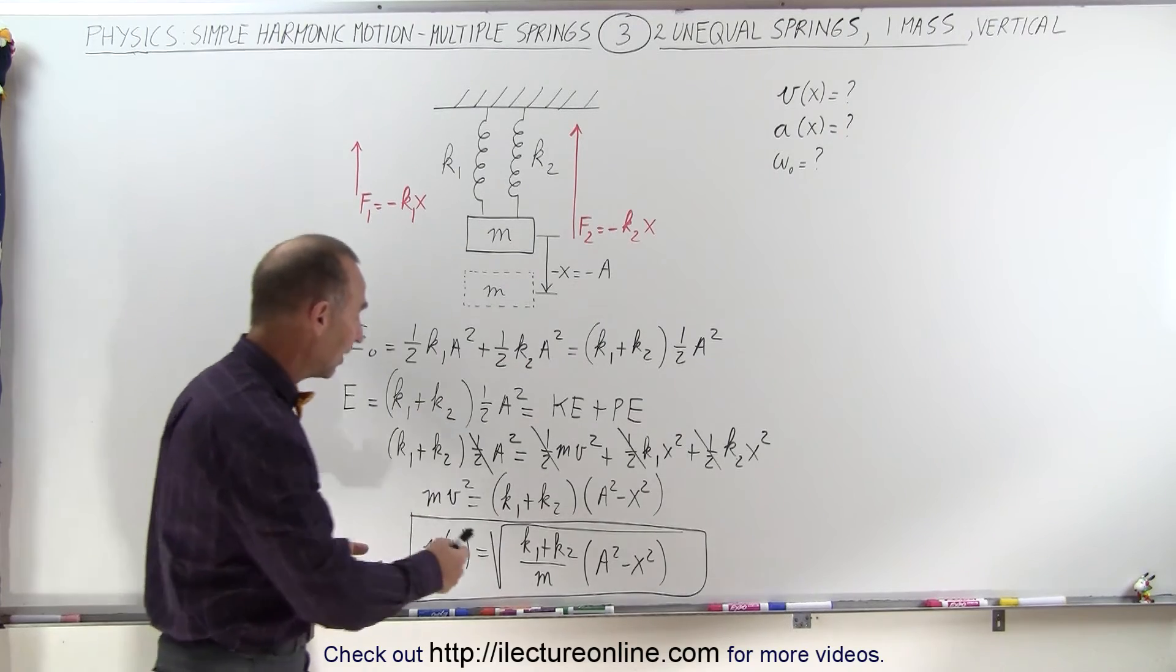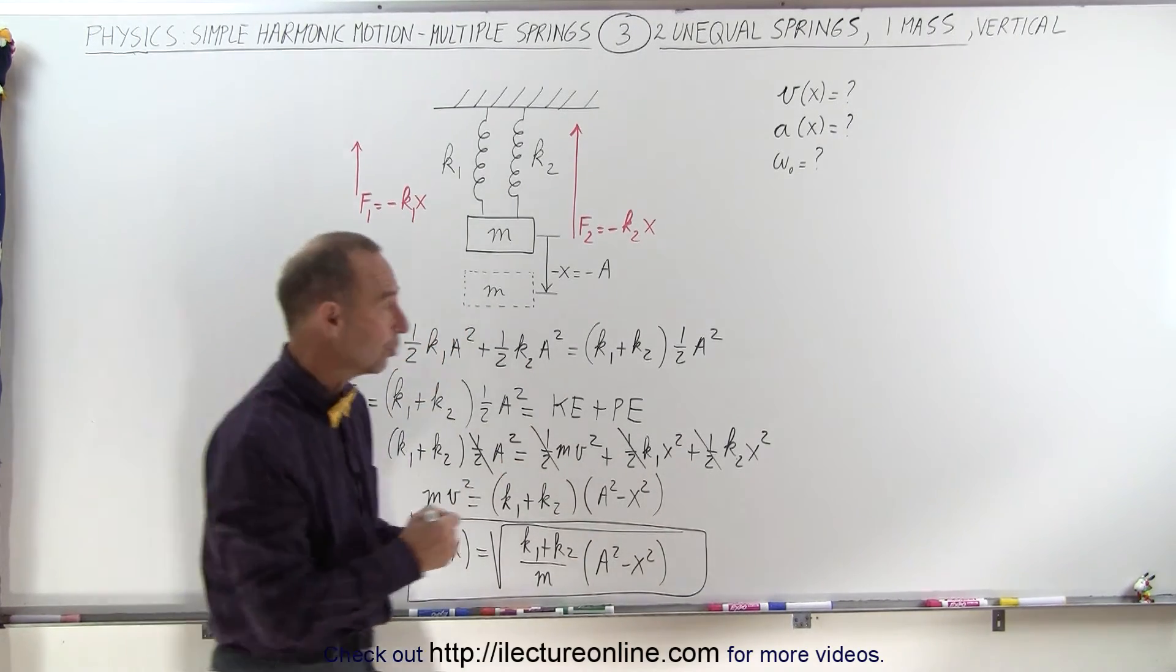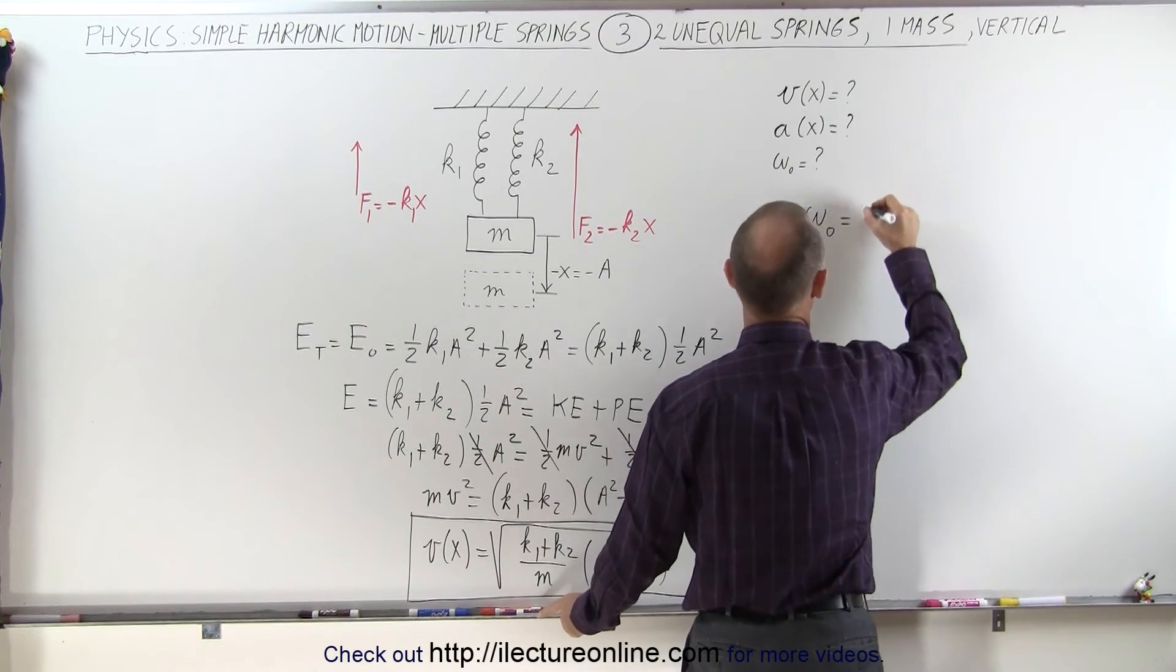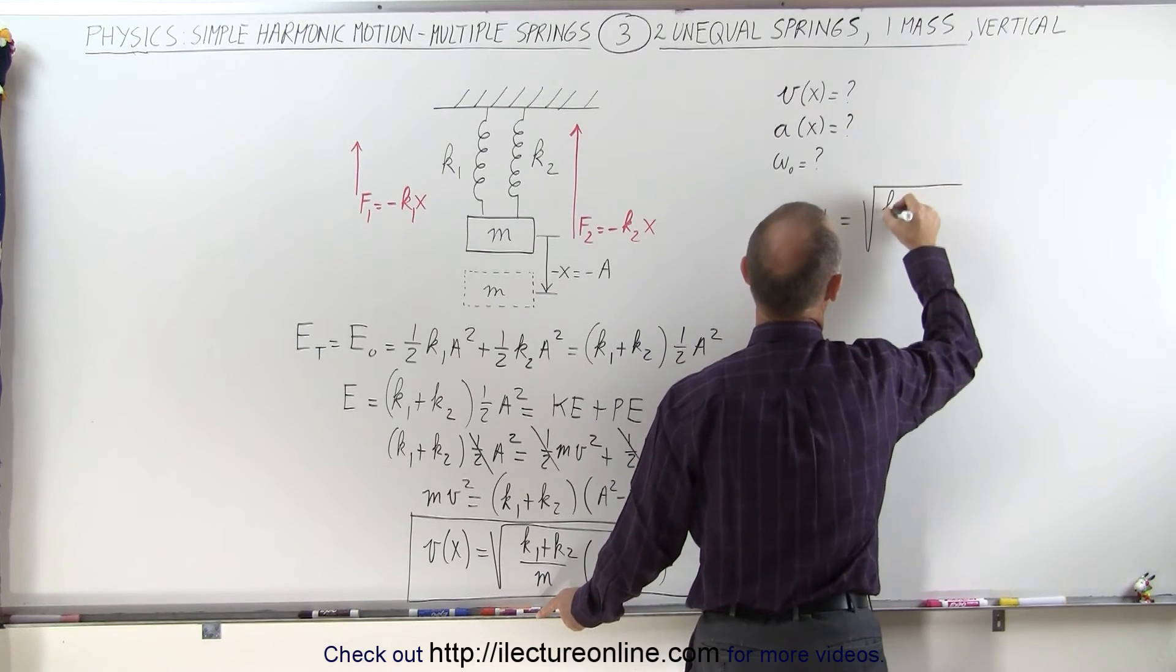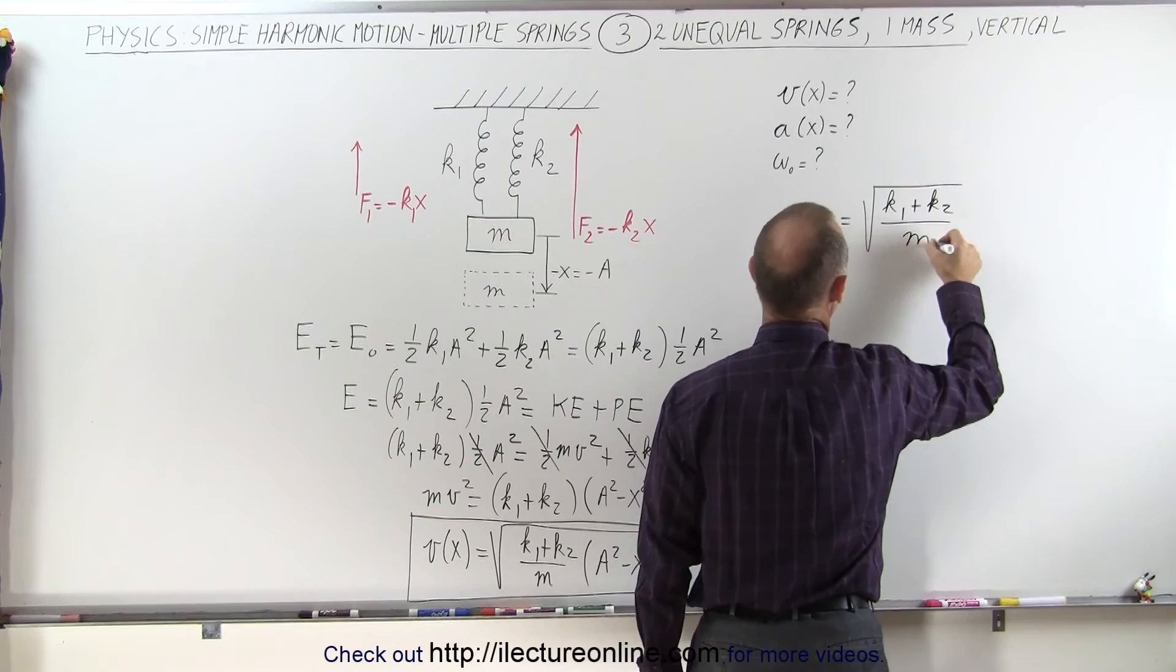Next, we realize that this here, again, represents the natural frequency of oscillation, which means that in this example, omega sub-naught, the natural angular frequency is going to be equal to the square root of the sum of the two spring constants divided by the mass.